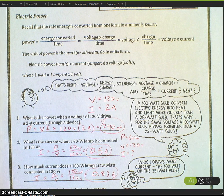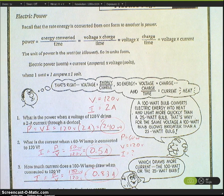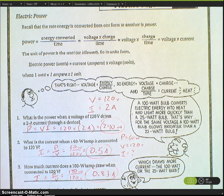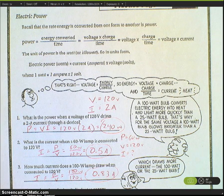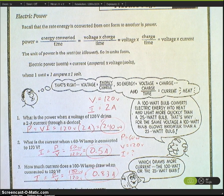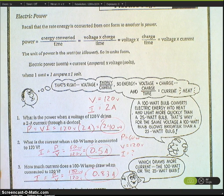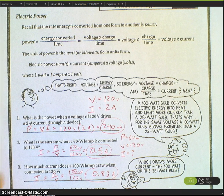Number three: how much current does a 100 watt lamp draw when connected to a 120 volt source? Same equation, same process. Period five, we've got to be quiet. There should be no talking. Remember there was complete silence in period three.